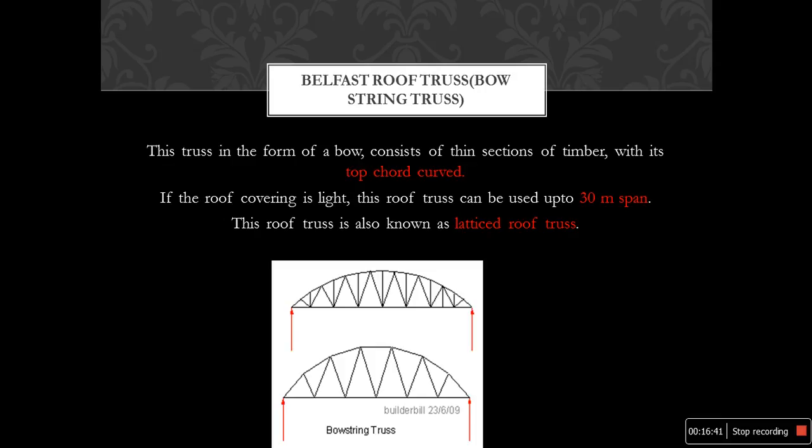The Belfast roof truss is also called a bowstring truss. It is a common type of bowstring truss adopted in bridge construction as well. This roof truss can be used for spans up to 30 meters.